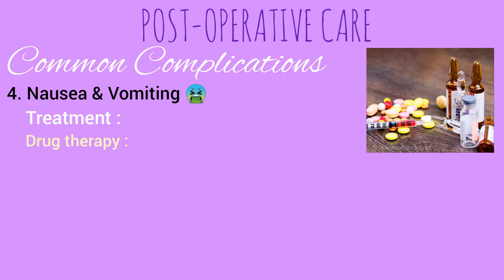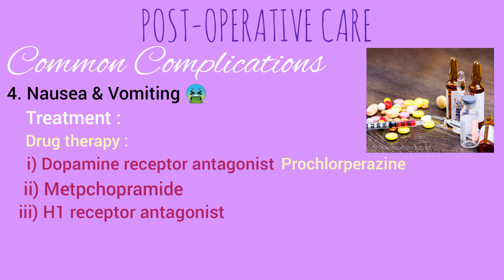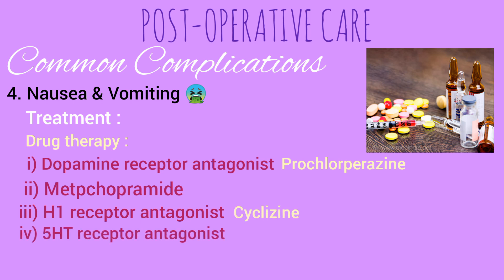Drug therapy for nausea and vomiting includes dopamine receptor antagonists like prochlorperazine and metoclopramide, H1 receptor antagonists like cyclizine, and 5-HT3 receptor antagonists like ondansetron.